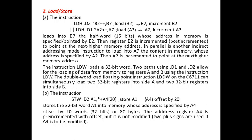The next instruction is load or store. LDH loads into B7 the half-word of 16 bits whose address in memory is specified or pointed to by B2. The register B2 is then incremented to point to the next memory address, B2 plus 1. In parallel, another indirect addressing mode instruction loads into A7 the memory content specified by the A2 pointer, and A2 is incremented to point to the next higher memory address A2 plus 1.